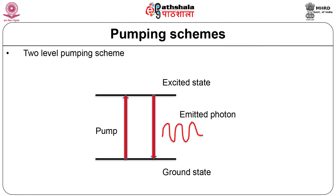In the two-level pumping scheme shown in the diagram, it is difficult to attain population inversion for two reasons. First, if the excited level is a metastable level for population inversion, it will be less broadened and hence has a narrow bandwidth. The pump is required to move atoms from ground to excited level. Second, the same pump used to excite atoms can also cause de-excitation of atoms back to ground level. Due to this, suitable pumping schemes to generate laser light are three- and four-level pumping schemes.